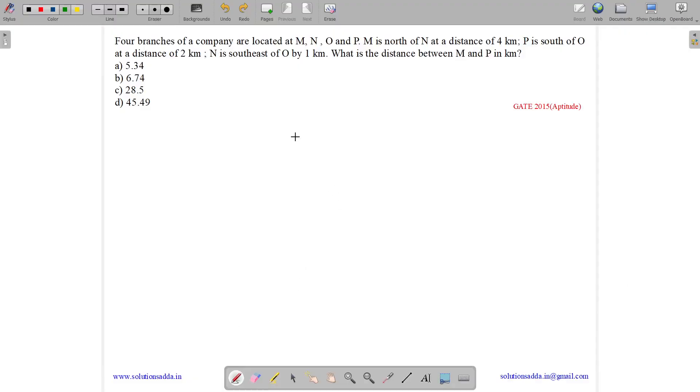This question belongs to aptitude subject and was asked in GATE CSE 2015. The question states, four branches of a company are located at M, N, O and P.